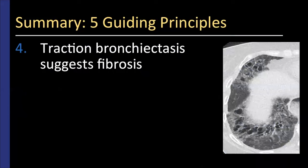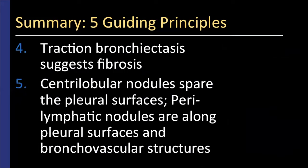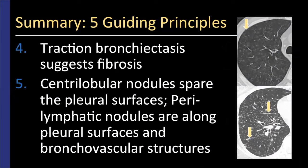Fourth, look for traction bronchiectasis because it can be a sign that fibrotic interstitial lung disease is present. Fifth, for small nodules, centrilobular nodule distribution typically spares the visceral pleural surfaces — they're a few millimeters away. In contrast, perilymphatic lung nodules are along the pleural surfaces, along the fissures, as well as the bronchovascular structures.